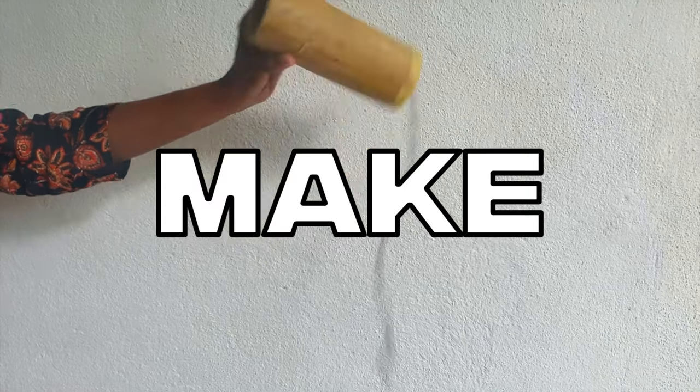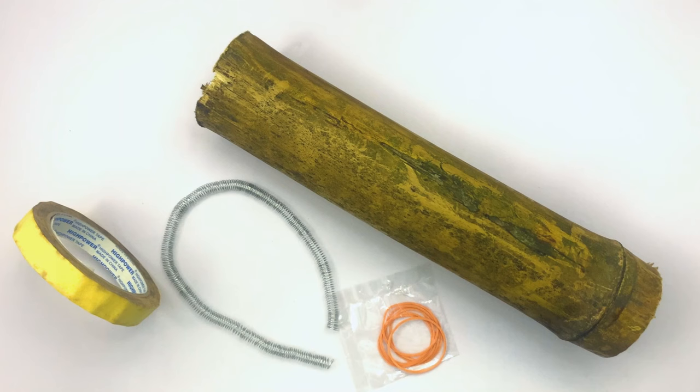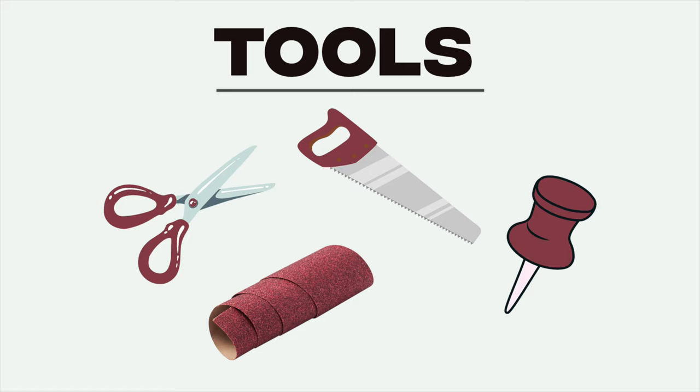I'm going to show you how to make a bamboo thunder drum. To make it you will need some stronghold tape, a metal spring, some tools and a bamboo tube.